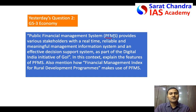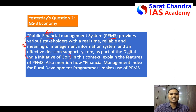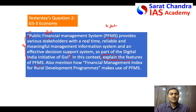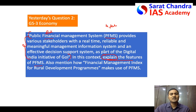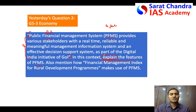Now the second question is about Public Financial Management System (PFMS). The question itself provides context explaining what PFMS is slightly, then asks two things. First: explain the features of PFMS. Note the word 'explain' carefully — if PFMS has 10 features and the question says enumerate or mention them, you write all 10 in one line each. But when it says 'explain,' select four or five important features and explain them properly, otherwise it will go beyond two pages.